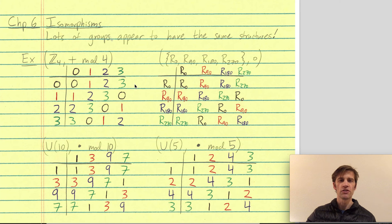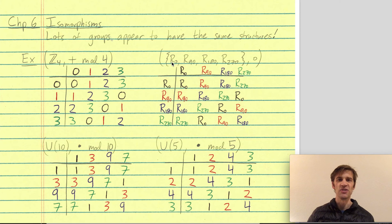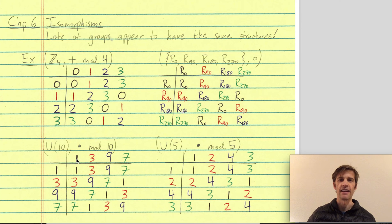Here we've listed four groups. They each have four elements and quite different operations. We have the integers mod 4, where the operation is addition mod 4, with its Cayley table. Similarly, we have rotations of the square — by 0, 90, 180, and 270 degrees — where the operation is composition. We have the group of units mod 10: the elements 1 through 9 relatively prime to 10, which are 1, 3, 9, and 7, with multiplication mod 10.